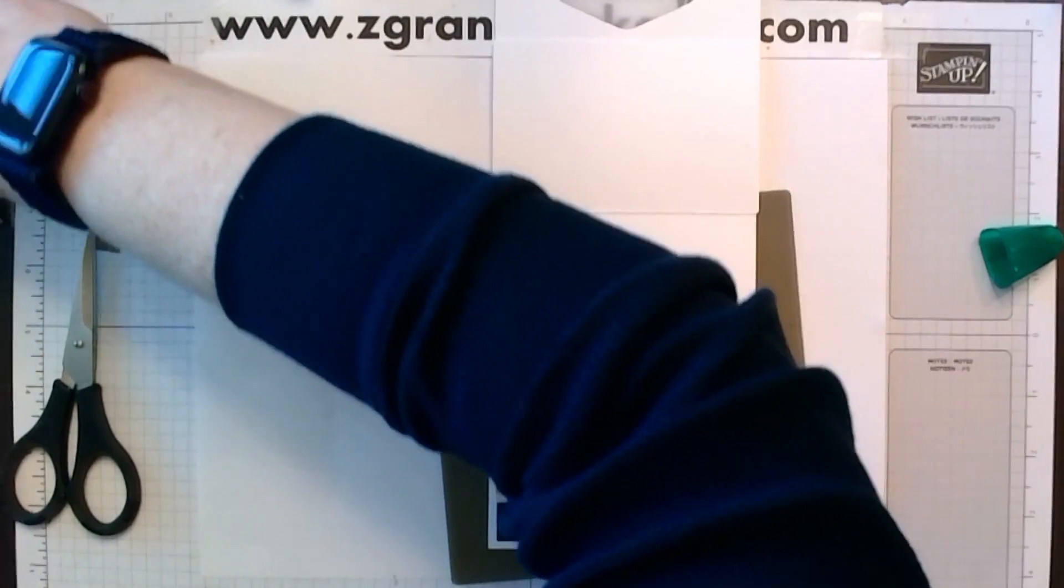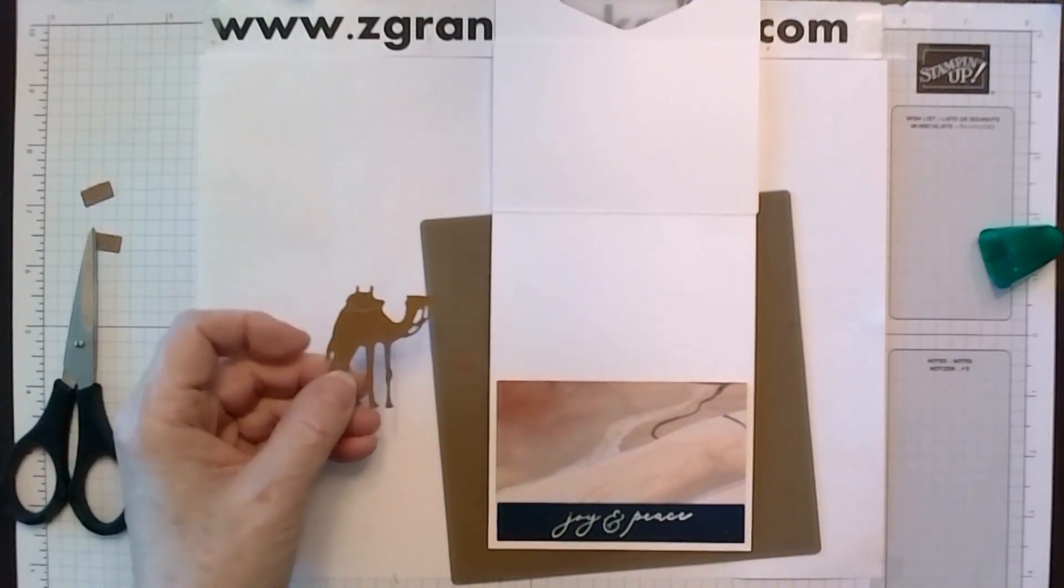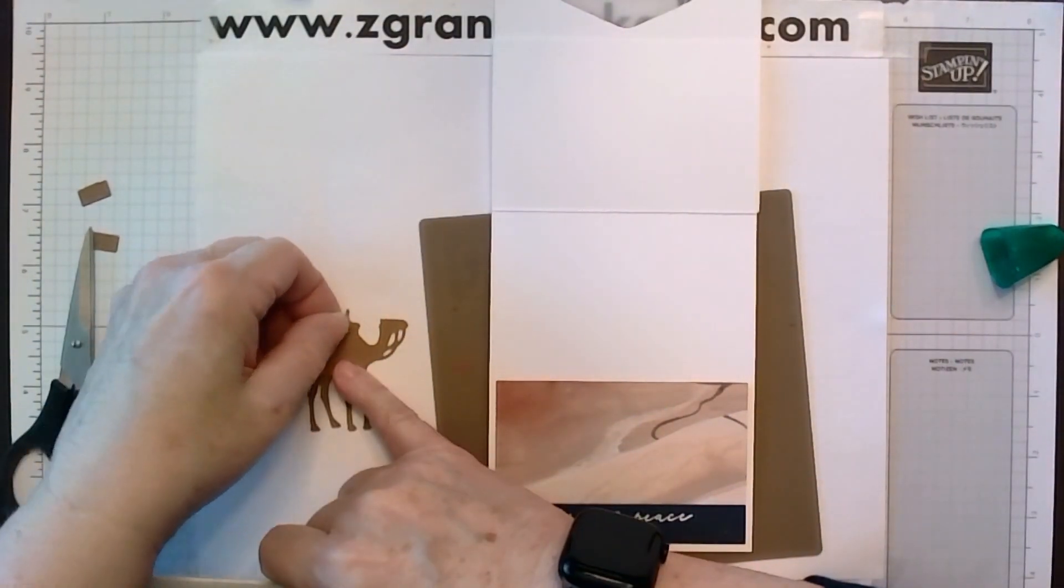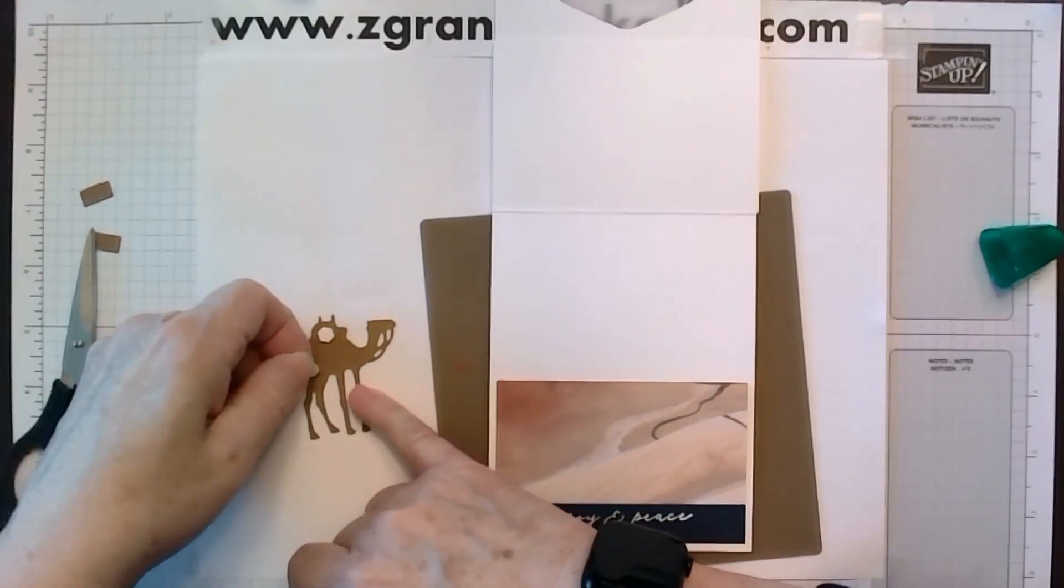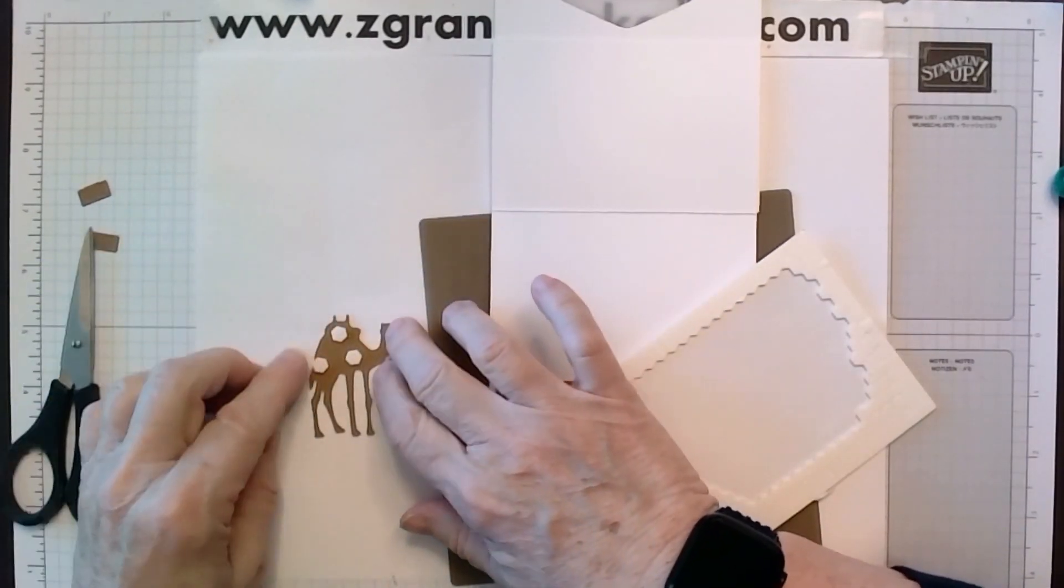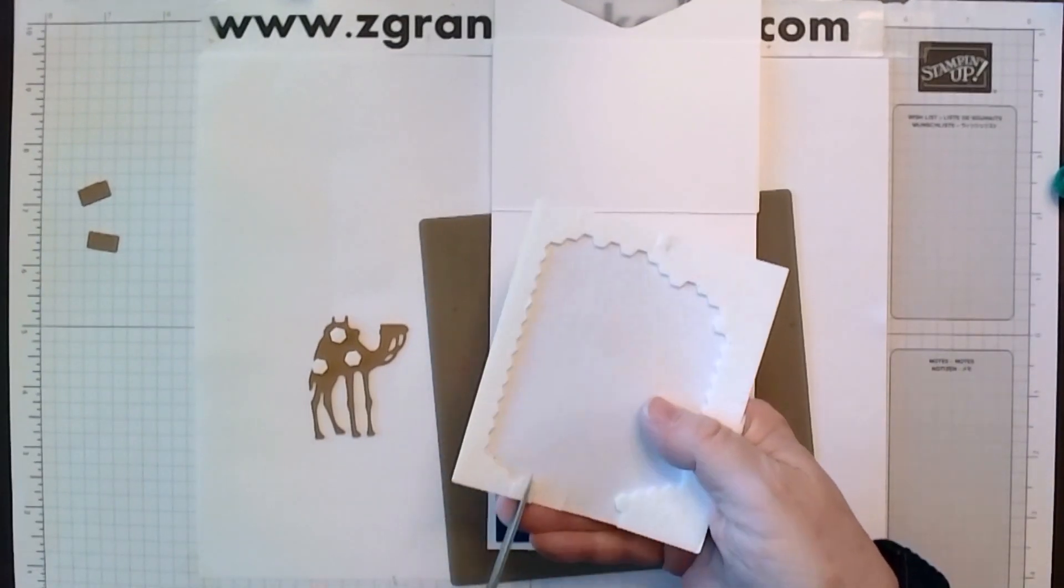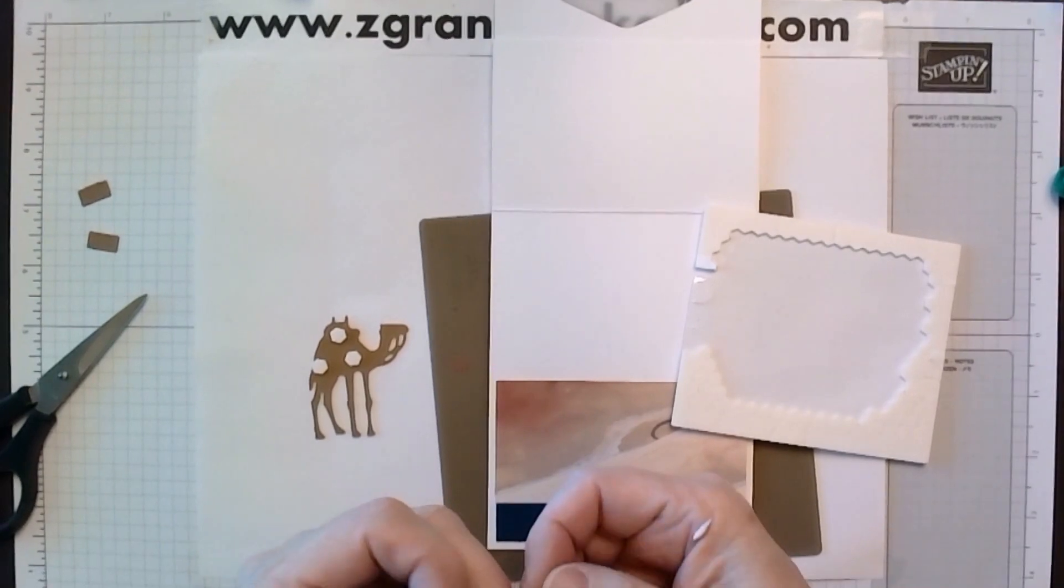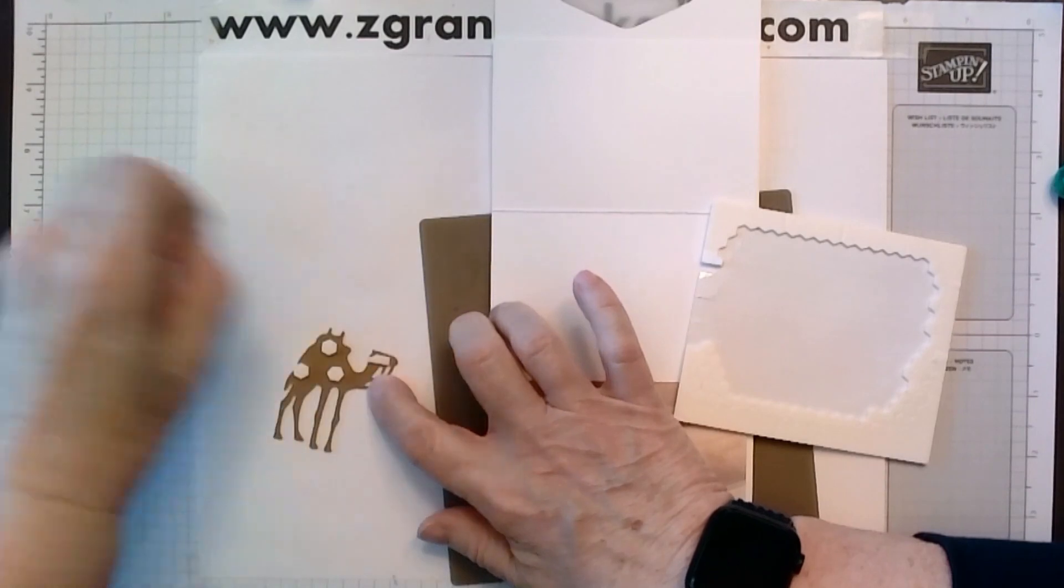Then we will take our camel. And this is going to be our stopper. And we have some dimensionals. And we're putting, you want to make sure that the first dimensional is right at the top of the camel. And then I just put a couple more on there. You don't need to worry about his legs. If you want to put a piece of one on the head, you just cut off a little piece. And then we'll just put that on his head. Like so.